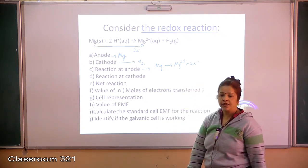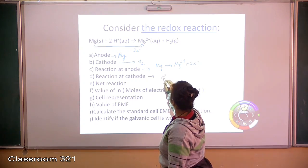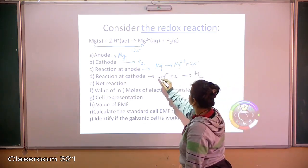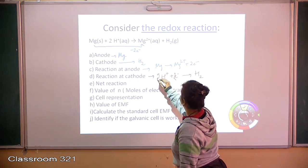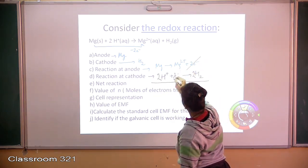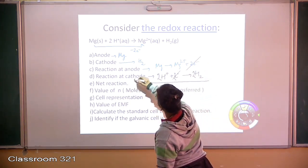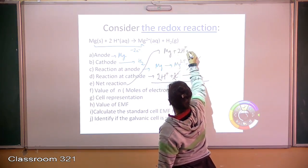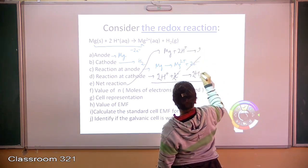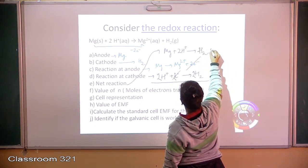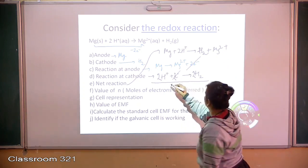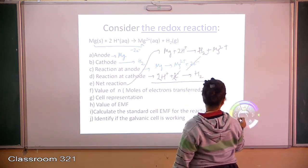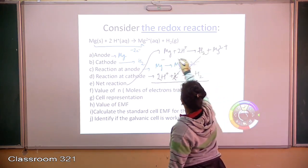At the cathode you have reduction: H⁺ gains electrons to become H₂. Since you have 2 electrons in the first equation, multiply the second equation by 2. Cancelling out the electrons, the net reaction becomes: Mg + 2H⁺ → H₂ + Mg²⁺. That is your net reaction in the cell.